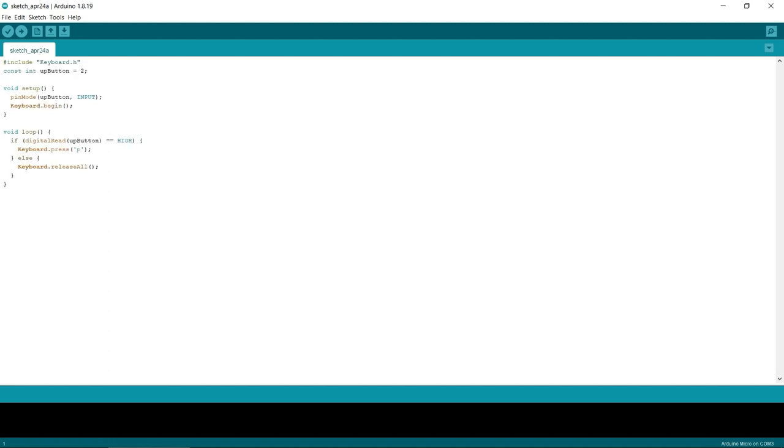This is the code. You can get it from the link in description. Instead of P, you can use any character or any other combination of keys. You can find a link to the list of modifier keys and last key table in the video description.